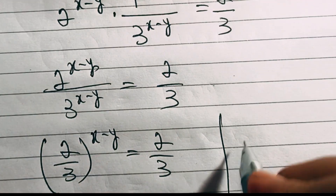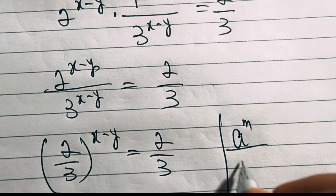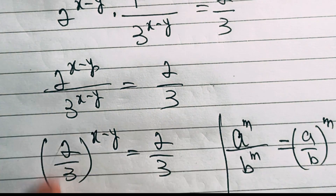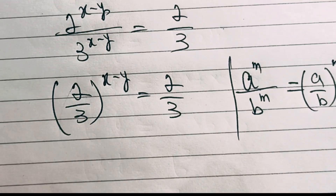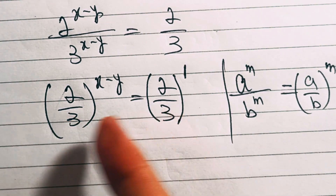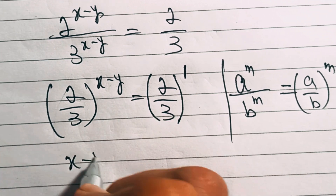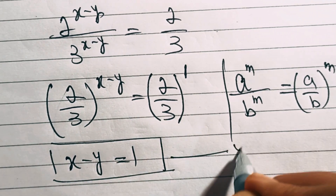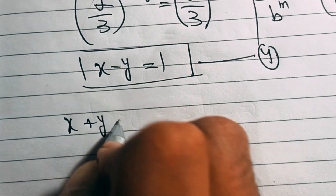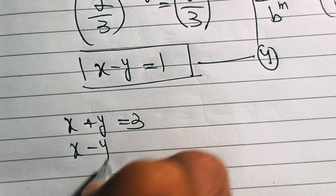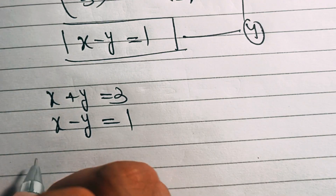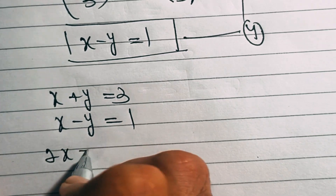This can be written as (2 over 3)^(x-y) equals 2 over 3, because a^m over b^m equals (a over b)^m. Since 2 over 3 has an exponent of 1 on the right side, and the bases are the same on both sides, x minus y equals 1. Let's call this equation four. So equation three is x plus y equals 3, and equation four is x minus y equals 1.